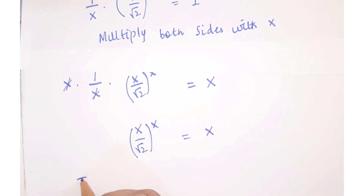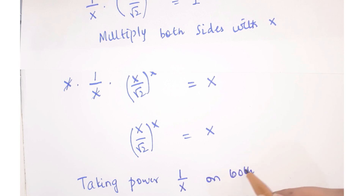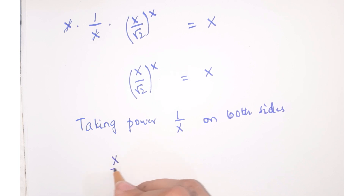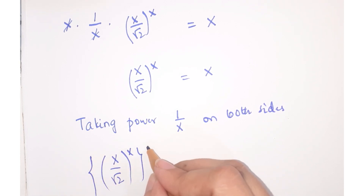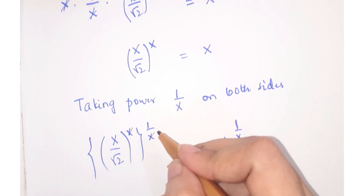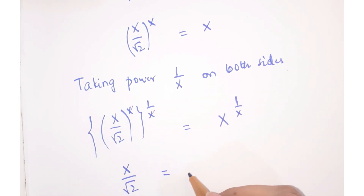Now we are going to take power 1 upon x on both sides. So we get x to the power 1 upon x — this and this gets cancelled — so we get x upon under root 2 is equal to x to the power 1 upon x.